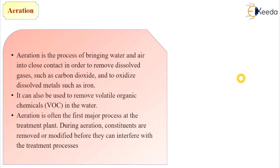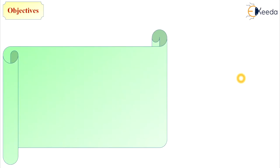Aeration is often the first major process at the treatment plants, provided as a primary treatment. During aeration, constituents or impurities present in water are removed or modified before they can interfere with the treatment processes. Generally in this process, we are oxidizing the impurities present in water into a stable form.